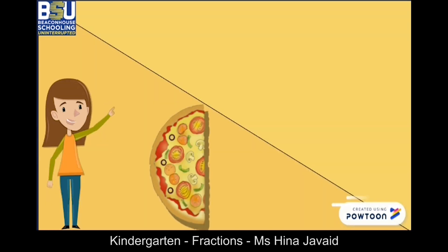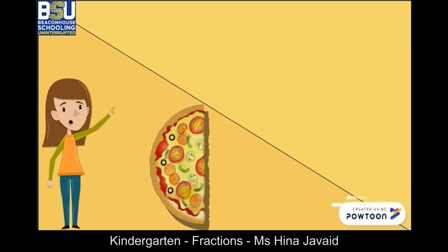Kids, in English we write half as h-a-l-f. Half. But in numbers we represent it as one over two. So don't forget that whole means one complete object, and half means two equal parts.